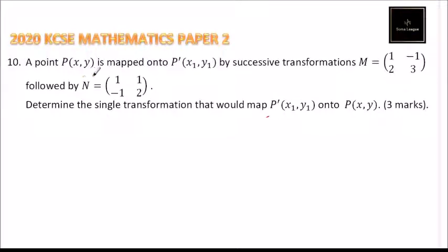A point P with coordinates (x, y) is mapped onto P' with coordinates (x₁, y₁) by successive transformations M equals (1, -1; 2, 3) followed by N equals (1, 1; -1, 2).